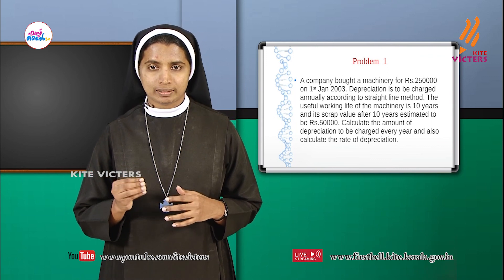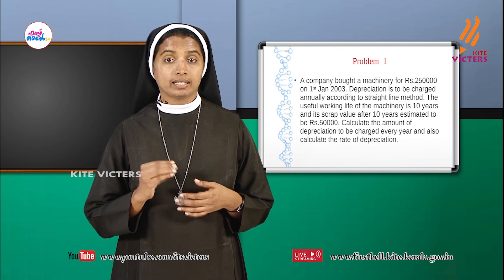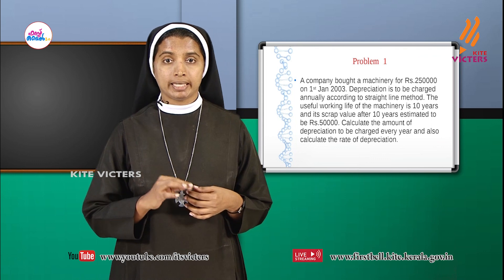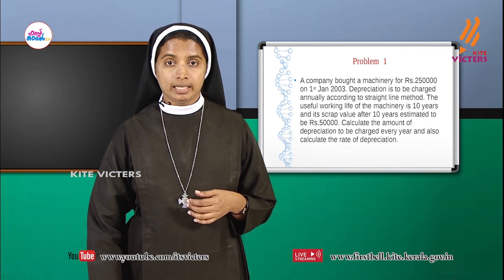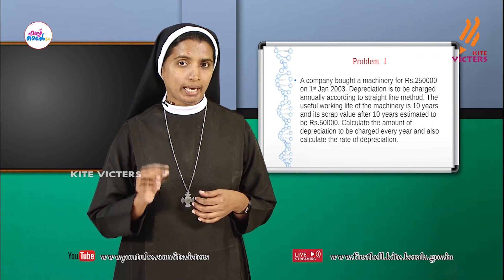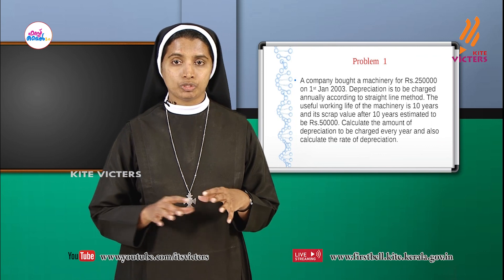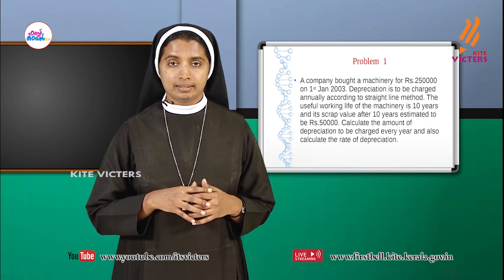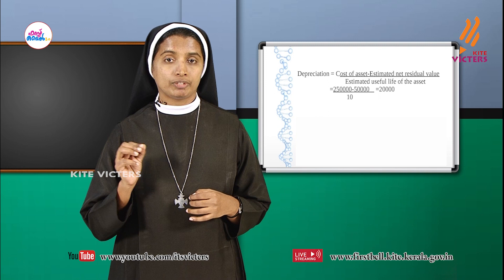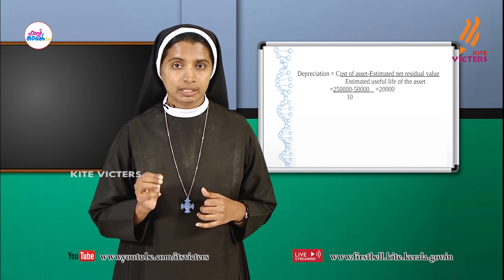We know the formula for calculating depreciation: depreciation equals cost of asset minus estimated net residual value, divided by estimated useful life of the asset. The cost of asset is ₹2,50,000, the scrap value is ₹50,000, and the estimated useful life is 10 years. So depreciation = (2,50,000 − 50,000) ÷ 10 = ₹20,000.